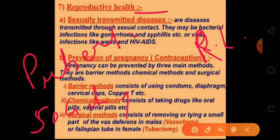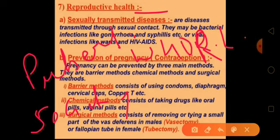Secondary school education should tell you about sexually transmitted diseases and the importance of reproductive health. Complications during pregnancy, childbirth, and unsafe abortions are causes of death of women. Sexually transmitted diseases are spread by unsafe sex. All these aspects of reproductive health have been considered by the WHO, the national population policy, and the national health policy of India.